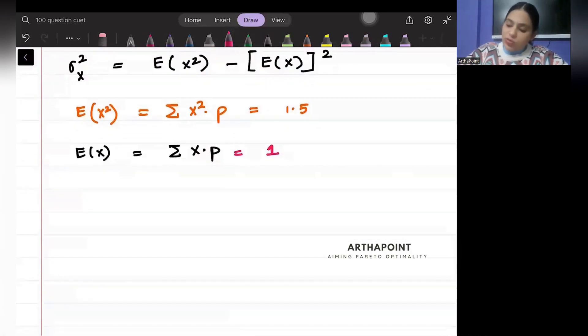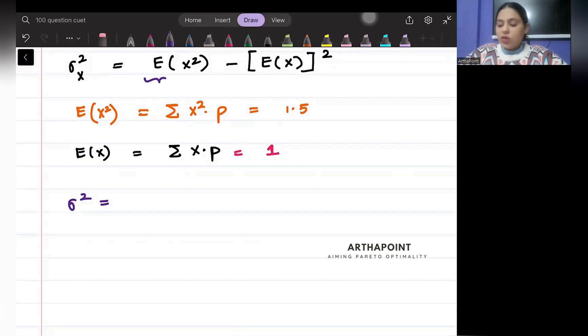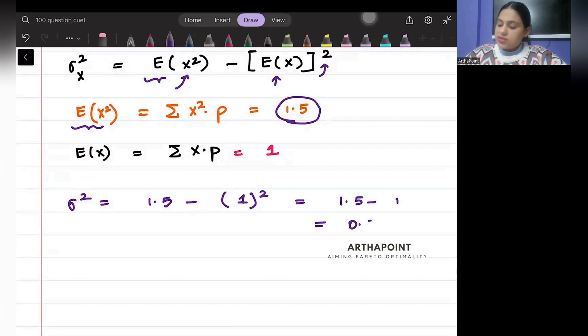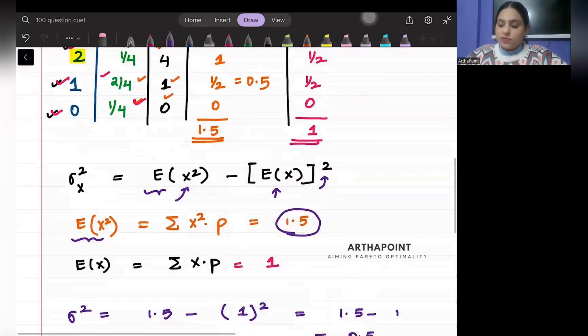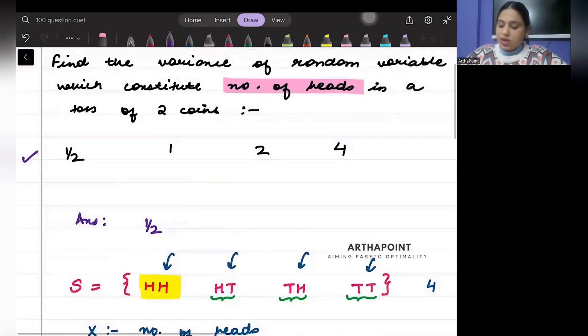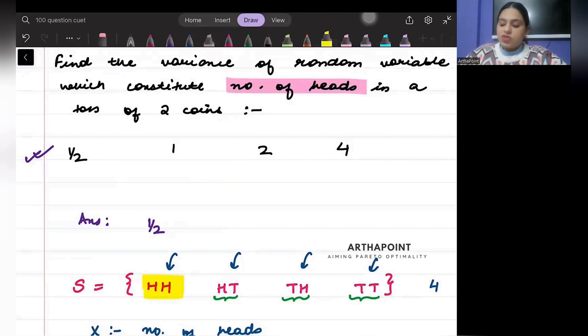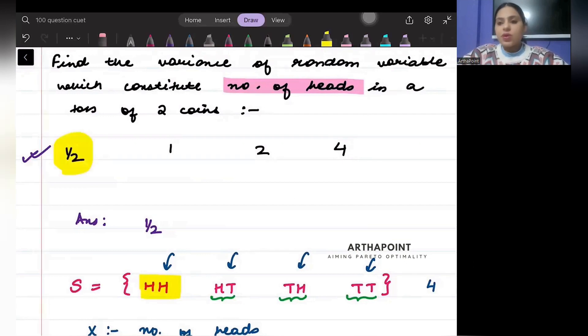So beta, what is going to be my σ²? σ² will be E(x²). So E(x²) I've got as 1.5 minus E(x) whole squared. E(x) I've got as 1 squared. This will be 1.5 minus 1, that means 0.5, that means half. So the variance in this case will be answer A, which is going to be half.